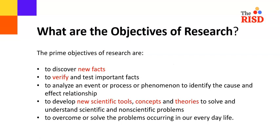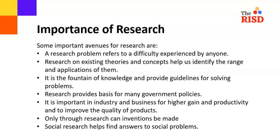What are the objectives of research? The prime objectives of research are to discover new facts, to verify and test important facts, to analyze an event or process or phenomena, to identify the cause and effect relationship, to develop new scientific tools, concepts and theories to solve and understand scientific and non-scientific problems, and to overcome or solve the problems occurring in our everyday life.